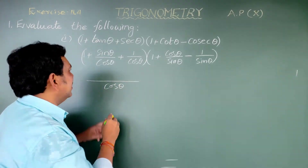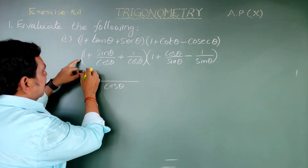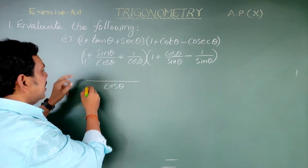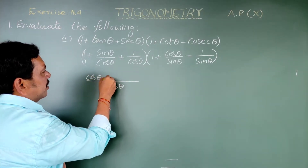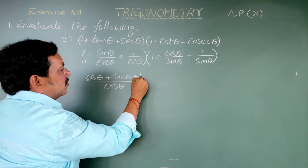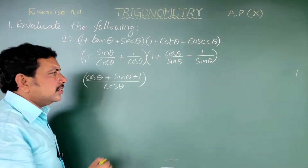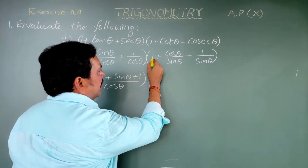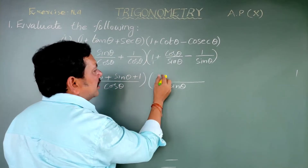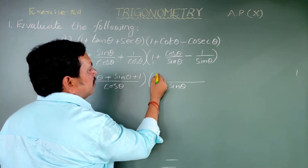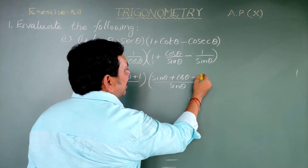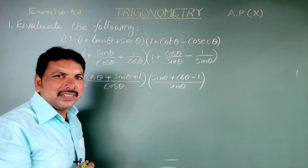Look here — the LCM is cos theta. Taking the LCM, one times cos theta gives cos theta, plus sin theta plus one. Here also, the LCM is sin theta: sin theta plus cos theta minus one.